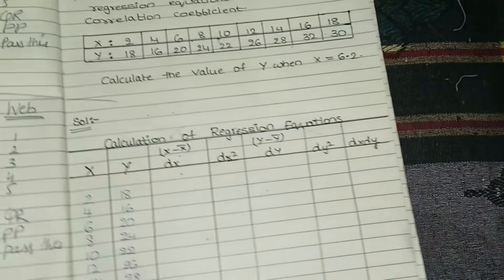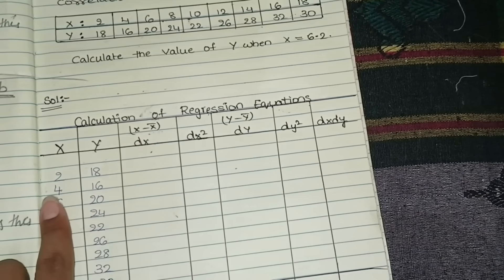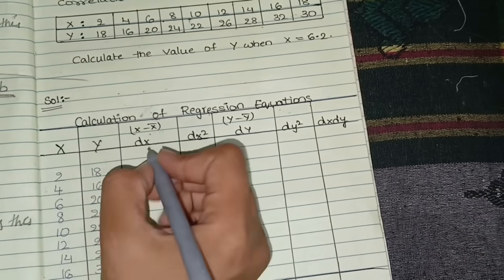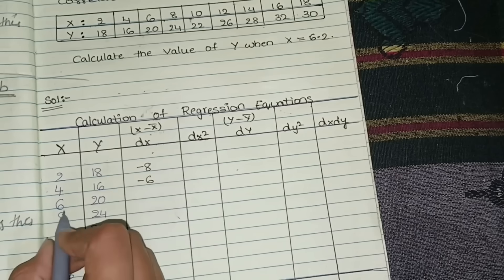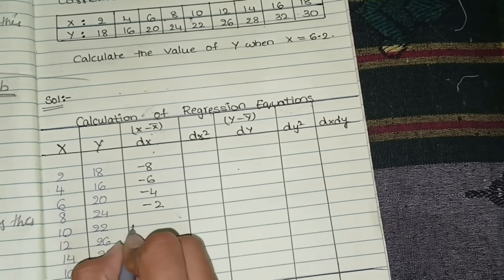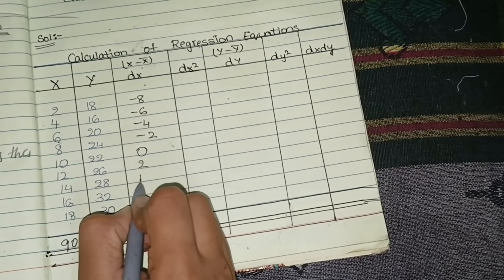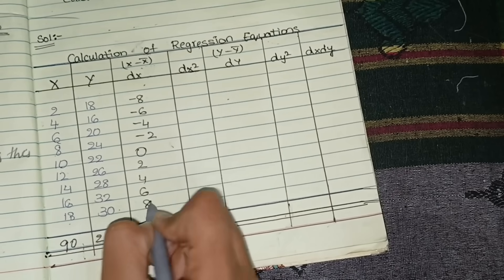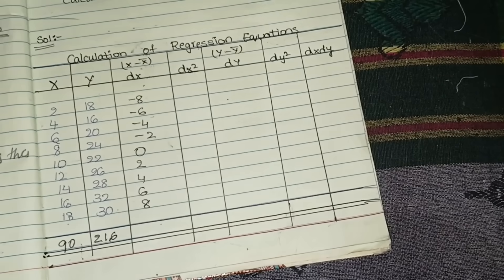Next we fill in the dx column, which is x minus x̄. x̄ = 10, so: 2 − 10 = −8, 4 − 10 = −6, 6 − 10 = −4, 8 − 10 = −2, 10 − 10 = 0, 12 − 10 = +2, 14 − 10 = 4, 16 − 10 = 6, 18 − 10 = 8. Now we calculate dx².